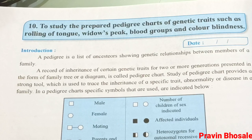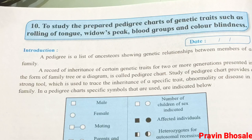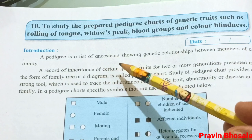You know family tree? In biology we call it pedigree, and pedigree means a family tree in which we observe the passing of a particular trait from one generation to another generation. So pedigree is a list of ancestors showing genetic relationship between members of a family.